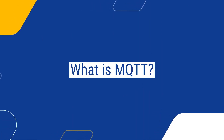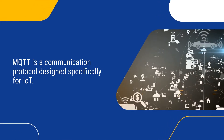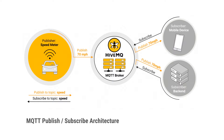Let us start with MQTT. MQTT is a communication protocol designed specifically for IoT. It has a publish-subscribe architecture. We have a client which is publishing data, a broker which is at the center of each communication, and one or more subscribers who are subscribing to data. The producing client, called the publisher, sends a specific data point to the broker, and the broker sends it to all interested subscribers. These subscribers can also be publishers themselves because we have bi-directional communication flow.